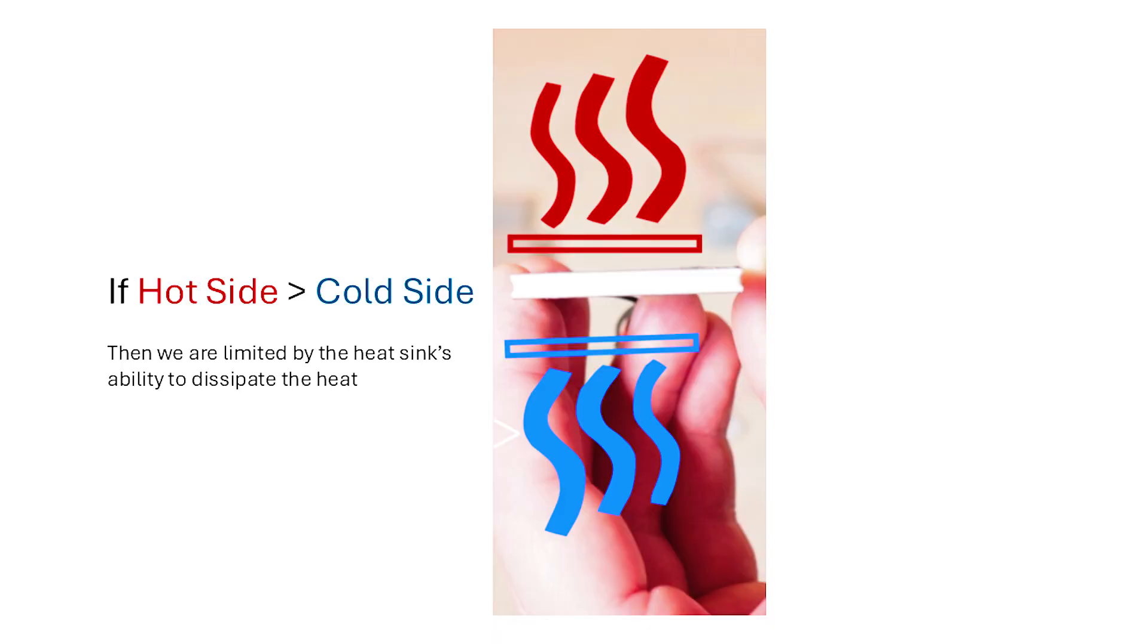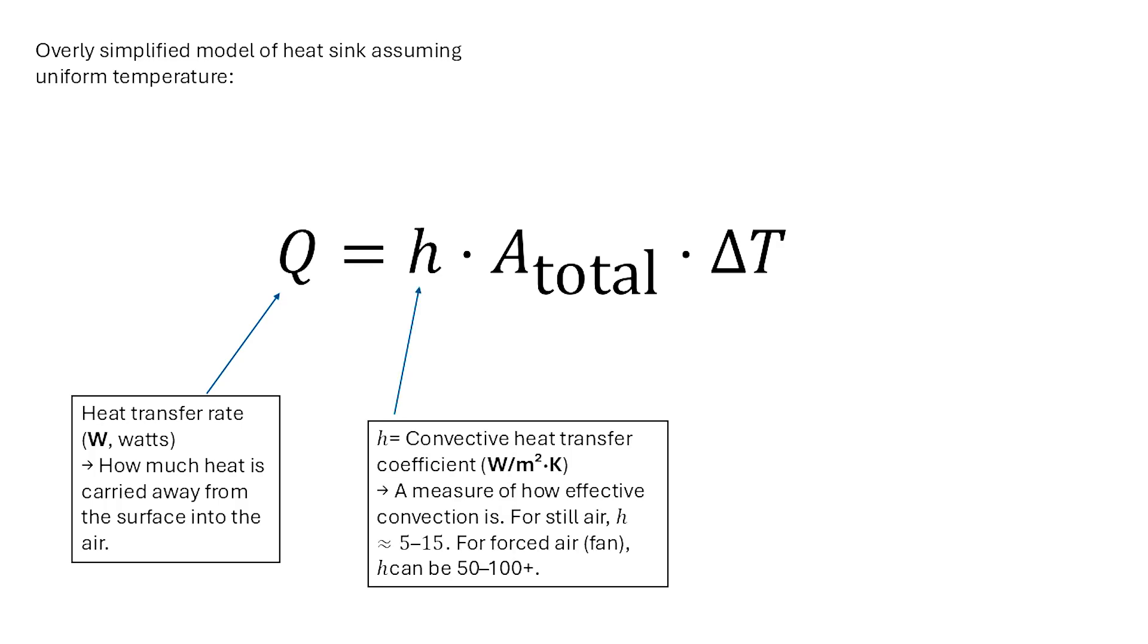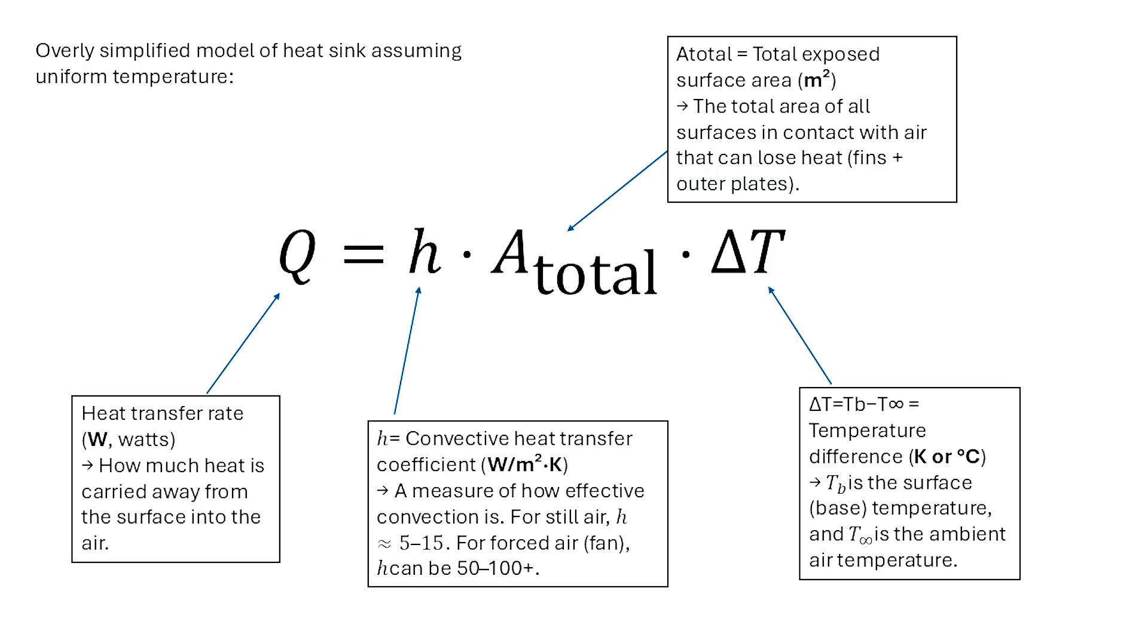Analyzing our system, we find that if the hot side inputs more energy than our cold side can dissipate, then we're limited by the heatsink's ability to dissipate the heat. To estimate the performance of our heatsink, we can use an overly simplified model, where Q is the total heat dissipation rate in watts, H is the convective heat transfer coefficient of air, A_total is the total exposed surface area of our heatsink, and delta T is the temperature difference between the temperature of our heatsink and the surrounding ambient air.